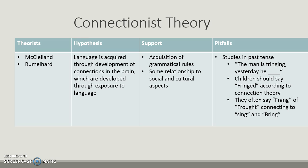Connectionist theories — McLelland and Rumelhardt — argue that language is acquired through the development of connections in the brain through exposure to language, closely connected to psycholinguistics. It's supported because we do acquire grammatical rules and there is some relationship to social and cultural aspects. However, large studies in the field present problems. For example, in a past-tense elicitation task — 'the man is bringing, yesterday he blank' — children according to connectionist theory should say 'fringed,' but they often say 'fring' or 'fraught,' connecting 'bring' with 'sing' or 'bring.'